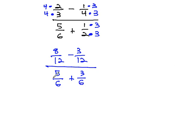Now we're ready to combine the numerators and denominators together. 8 twelfths minus 3 twelfths is 5 twelfths, over 5 sixths plus 3 sixths is 8 sixths. Now we're ready to try and reduce this fraction.